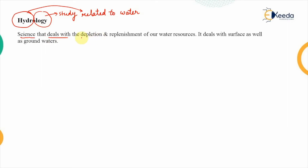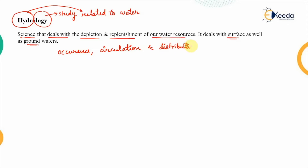Hydrology is a science that deals with the depletion and replenishment of our water resources, which may be either surface sources or groundwater sources. In total, hydrology deals with the occurrence — that is, where water is present — the circulation of water from one place to another, and the distribution of water, whether on the earth or in the atmosphere.